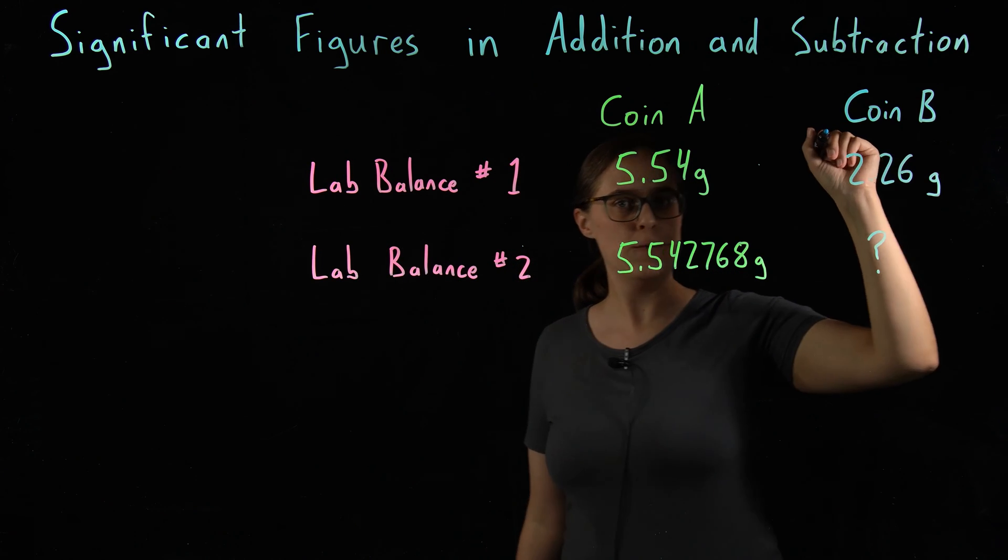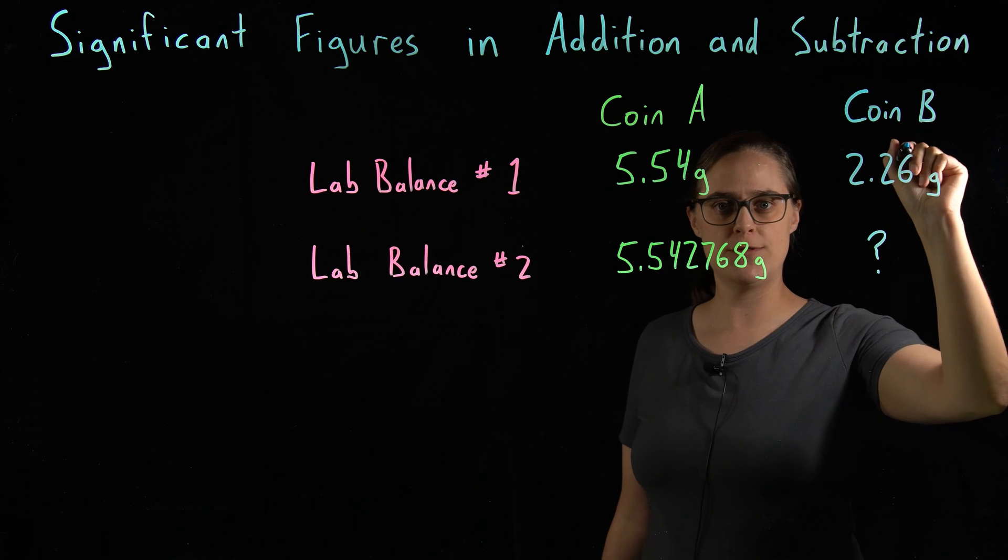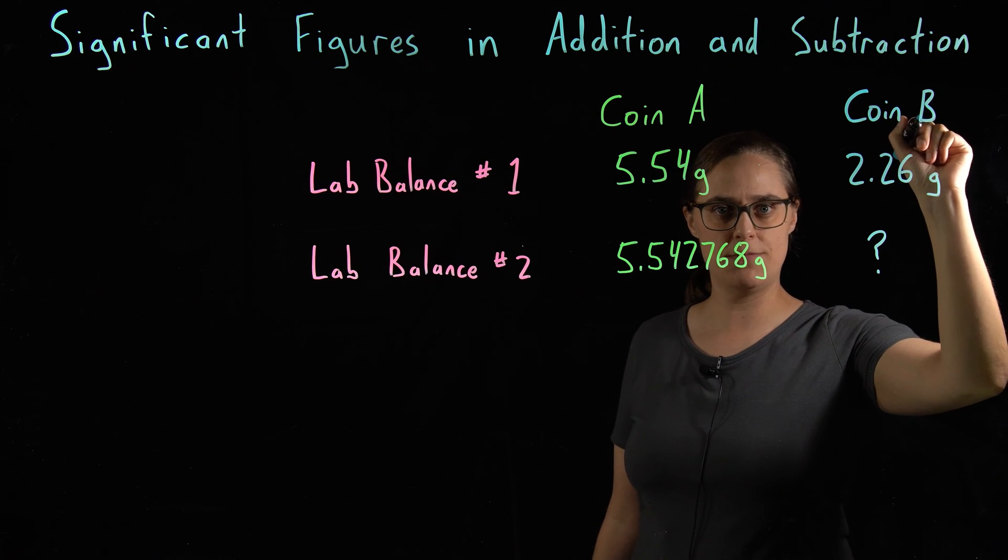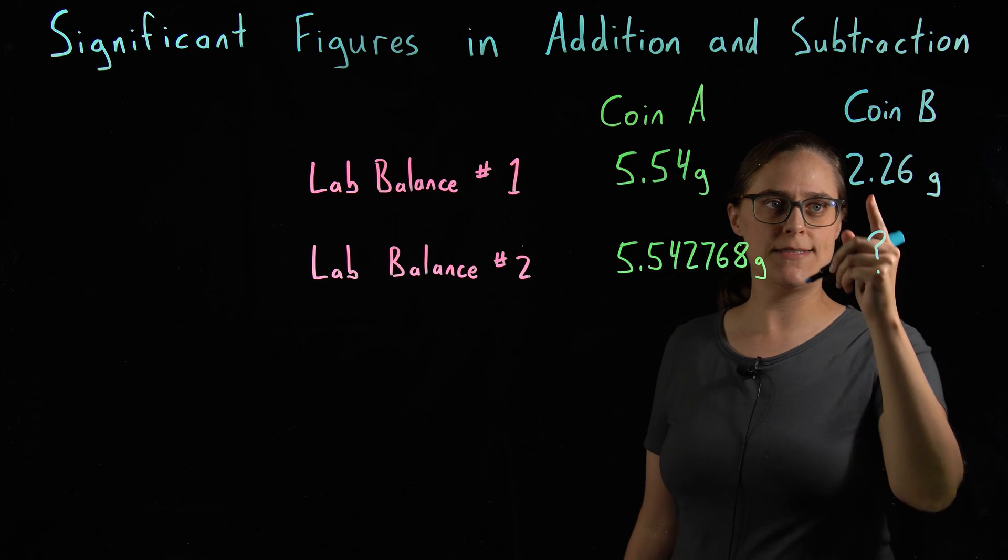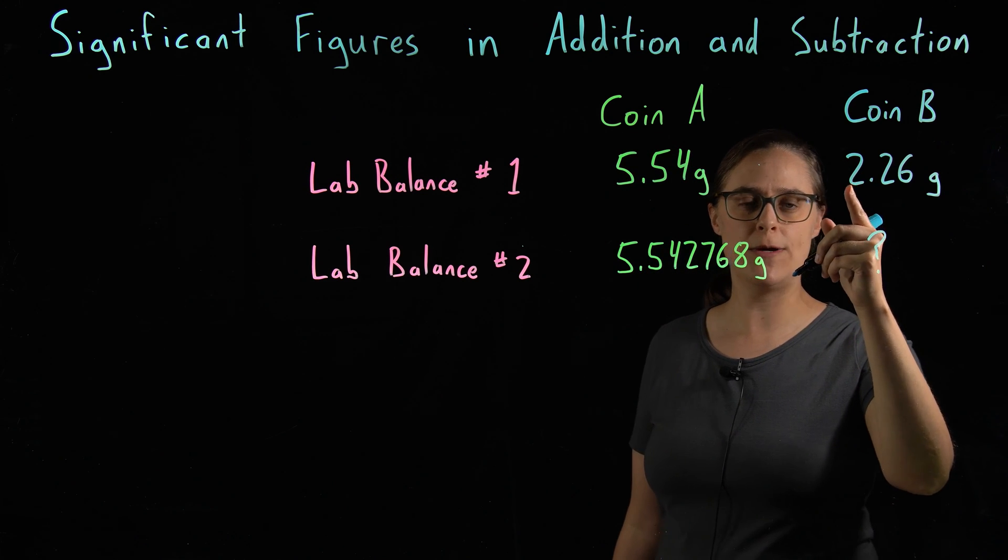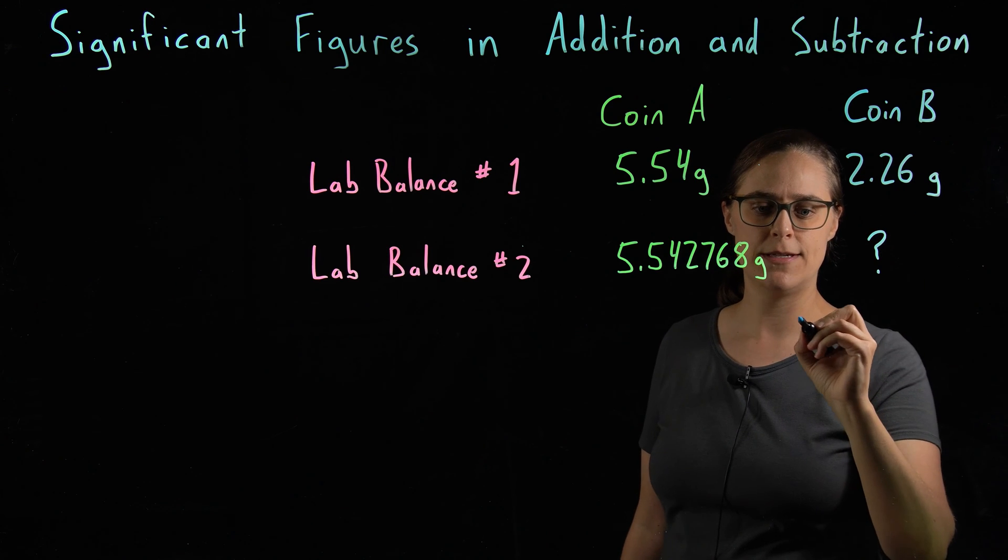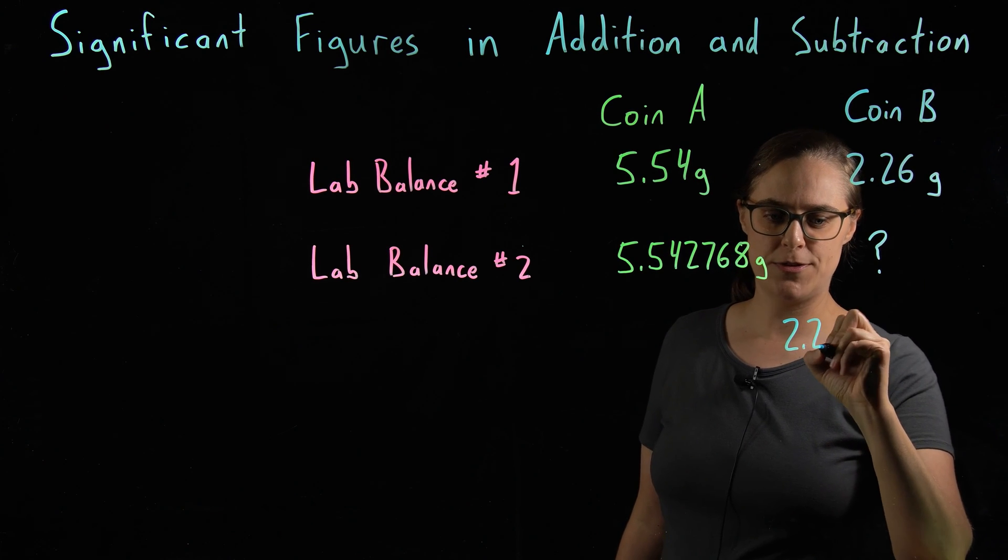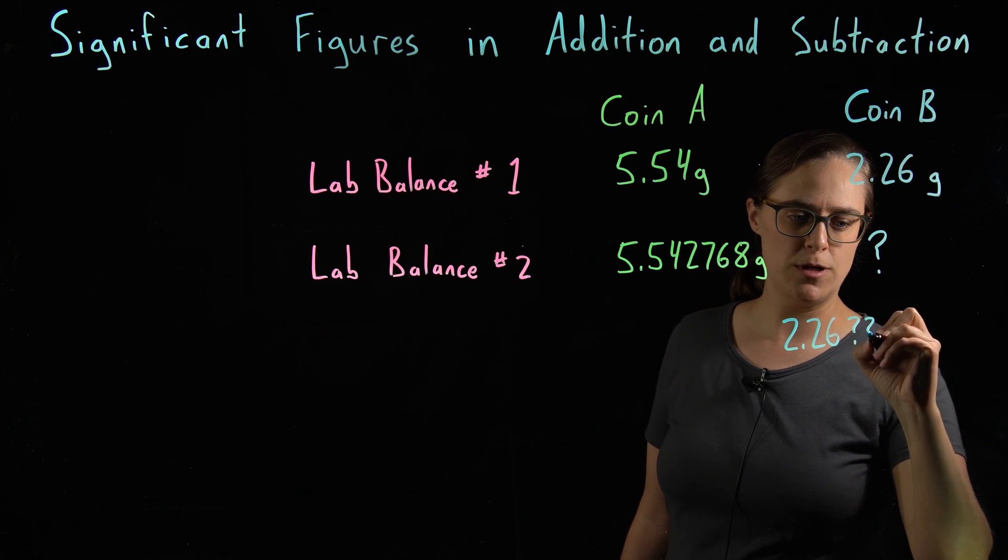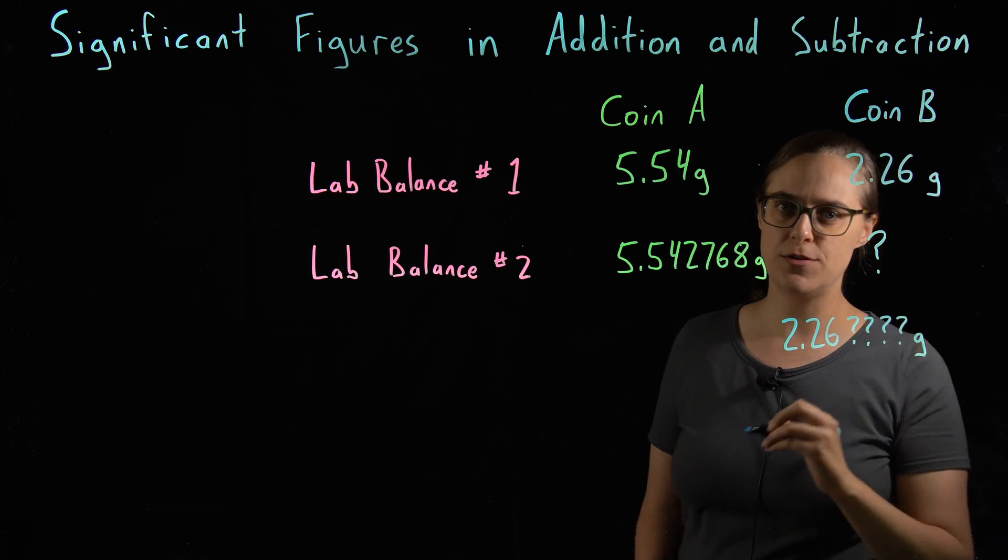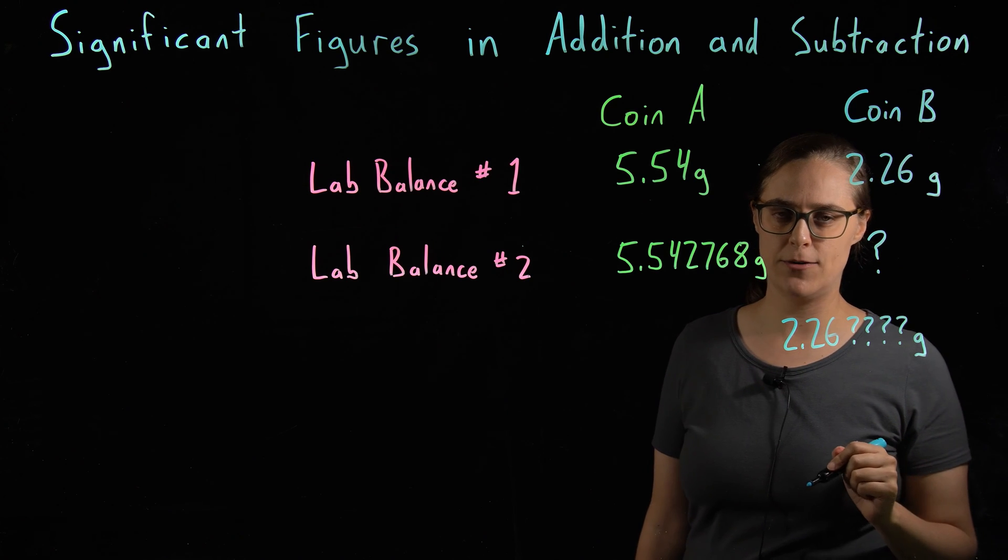For whatever reason, we were not able to use lab balance number 2 to measure the mass of coin B. So we don't know this number. What this means is that we are limited to only knowing 2.26 grams. If we did measure this on lab balance number 2, there would be 4 more digits here. We just don't have any idea what they are.